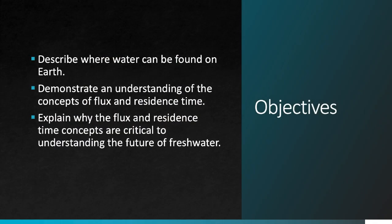The first thing we'll talk about is where water is found on Earth — this is crucial for understanding what parts of the water cycle we can actually use for human activities and what parts are functionally unavailable to us. By the end of this video, you should understand two fundamental scientific concepts: flux and residence time. These concepts are important for understanding the use and overuse of water, and you should be able to explain how they can be used when predicting the future of freshwater.